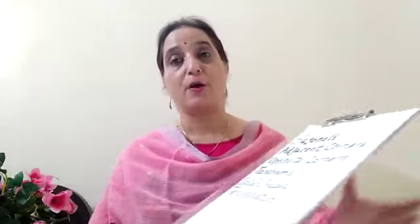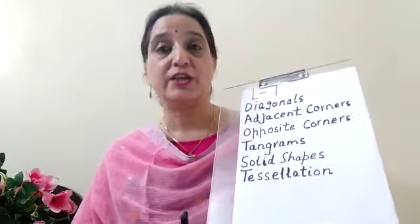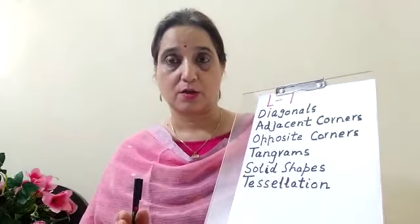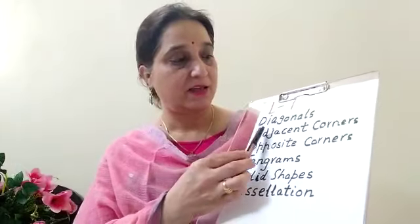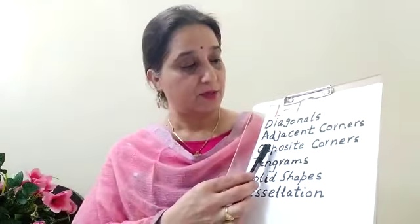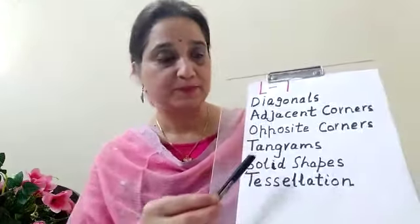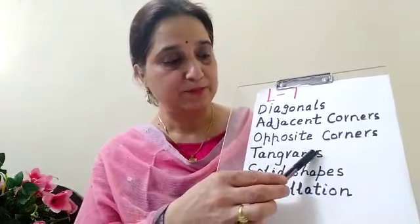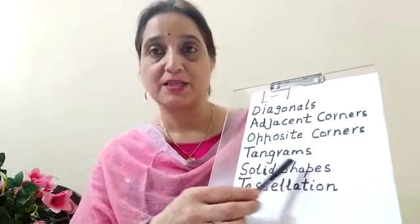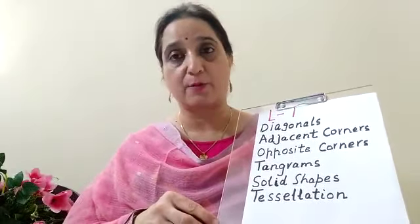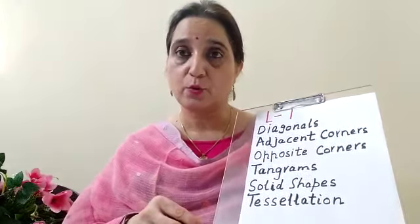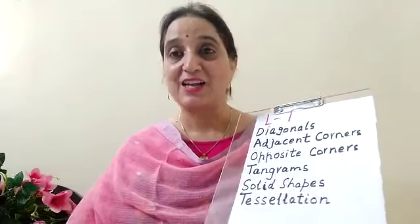So children, let's quickly recap the concept map of lesson number one, Shapes Around Us. What we learnt is: diagonals, adjacent corners, opposite corners, tangrams, solid shapes, and tessellation. For each topic, worksheets are being uploaded — please go through the worksheets, practice, and revise.